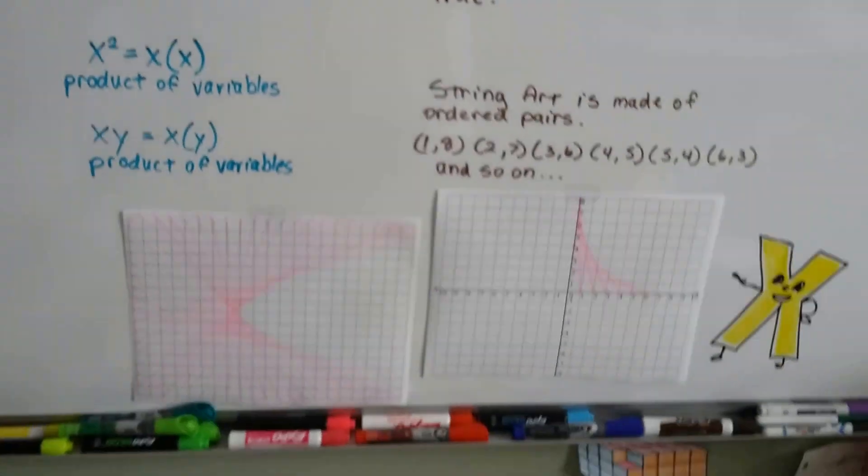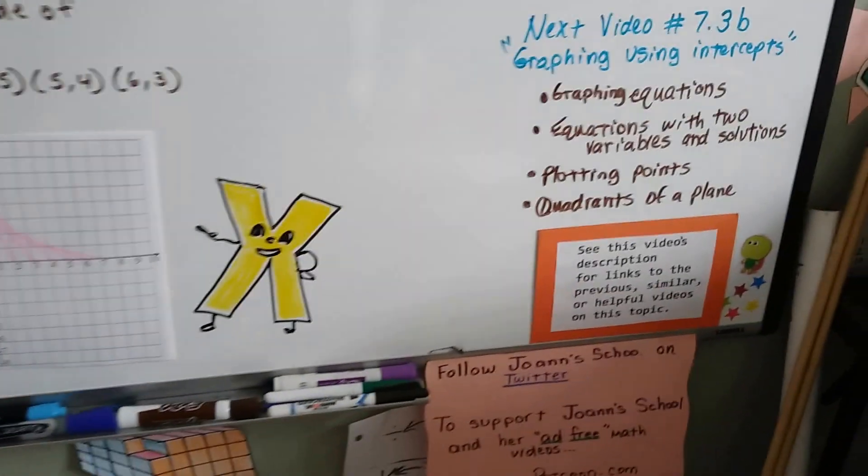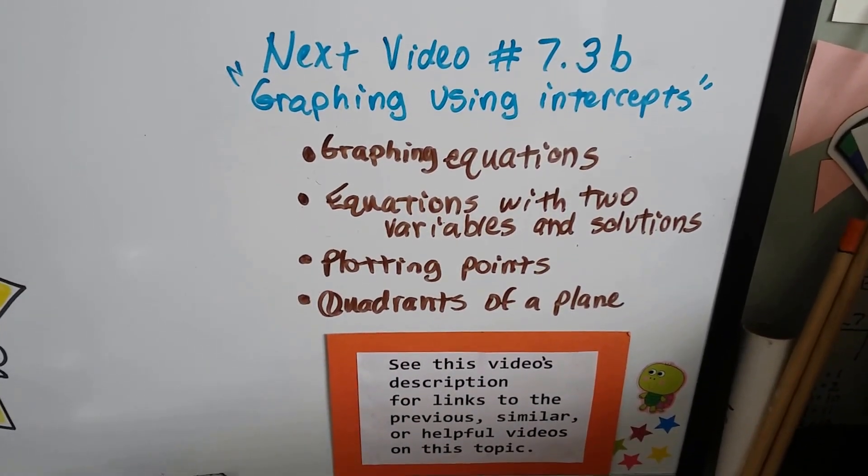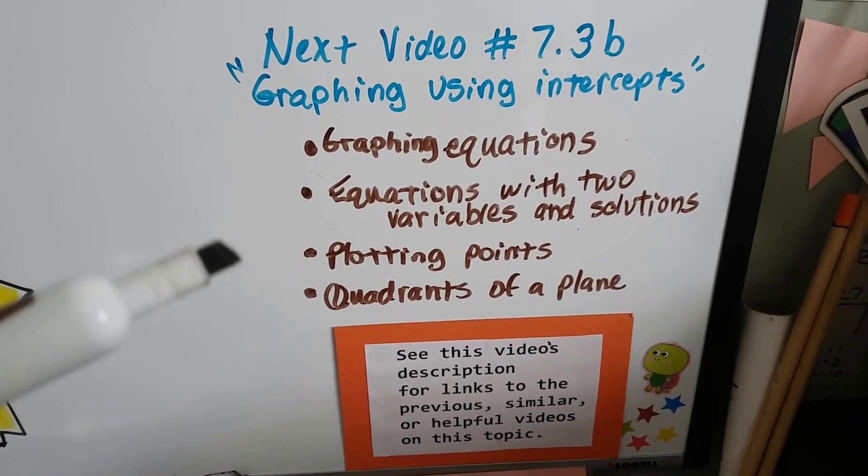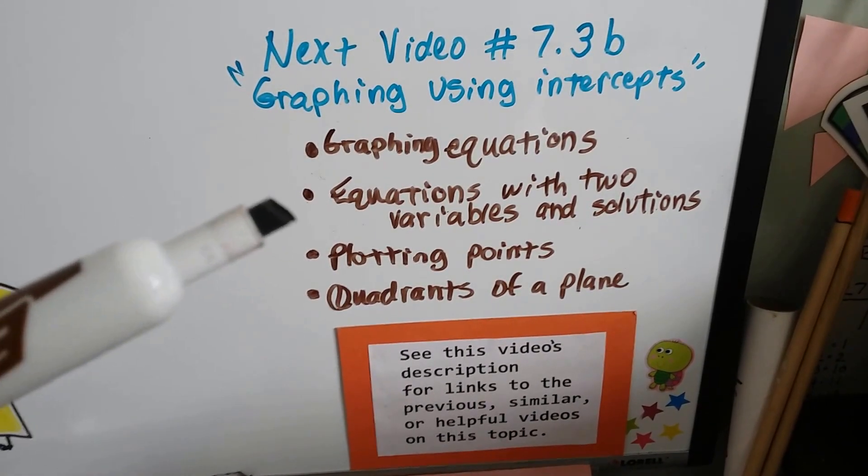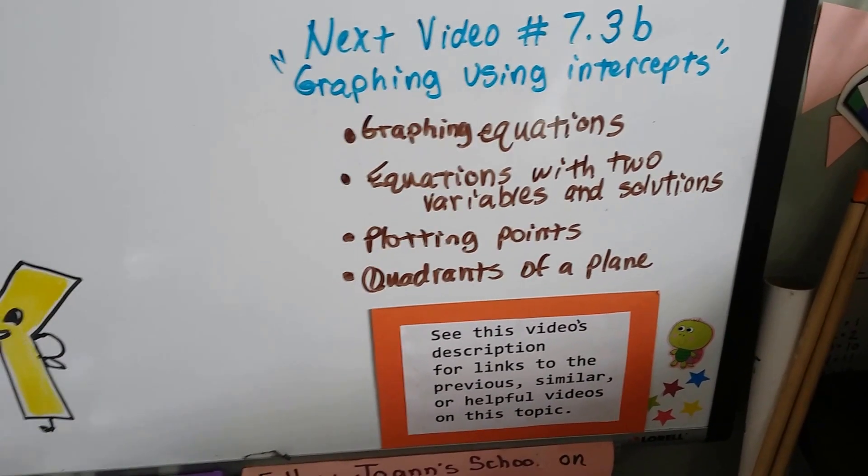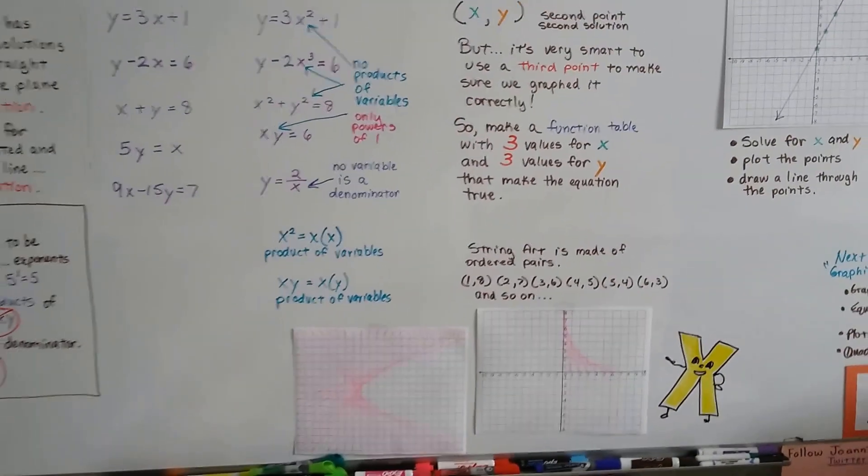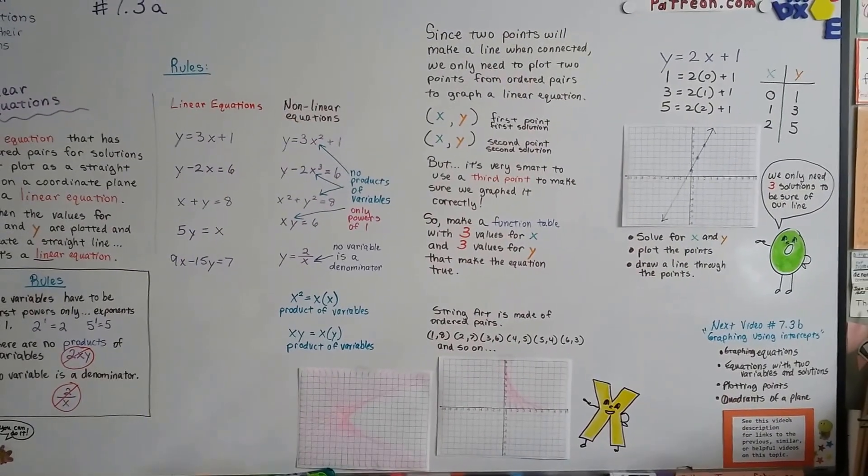That'll give you a break from math, right? So we're going to move on to graphing using intercepts in our next video, 7.3b. And of course in this Algebra 1 playlist, if you want to go back to graphing equations or equations with two variables and their solutions or plotting points or the quadrants of a plane, those links will be in this description. I'll see you next video. Keep your chin up. We can do this. Bye.